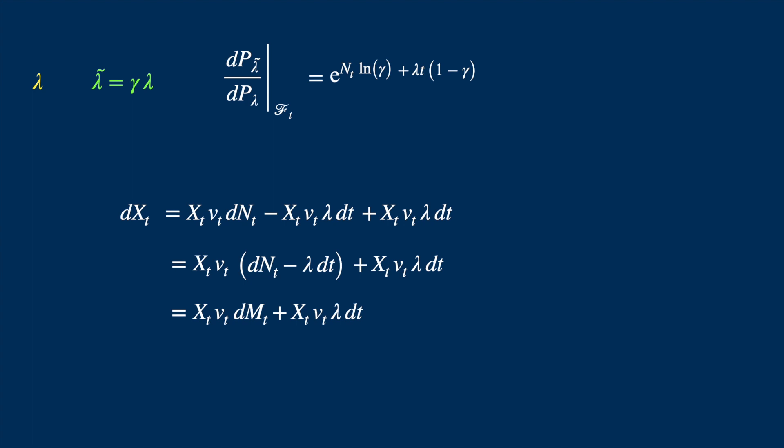And then the last term as it is. We have done nothing here. We haven't applied the change of probability measure. We just represented the same equation in two different ways.